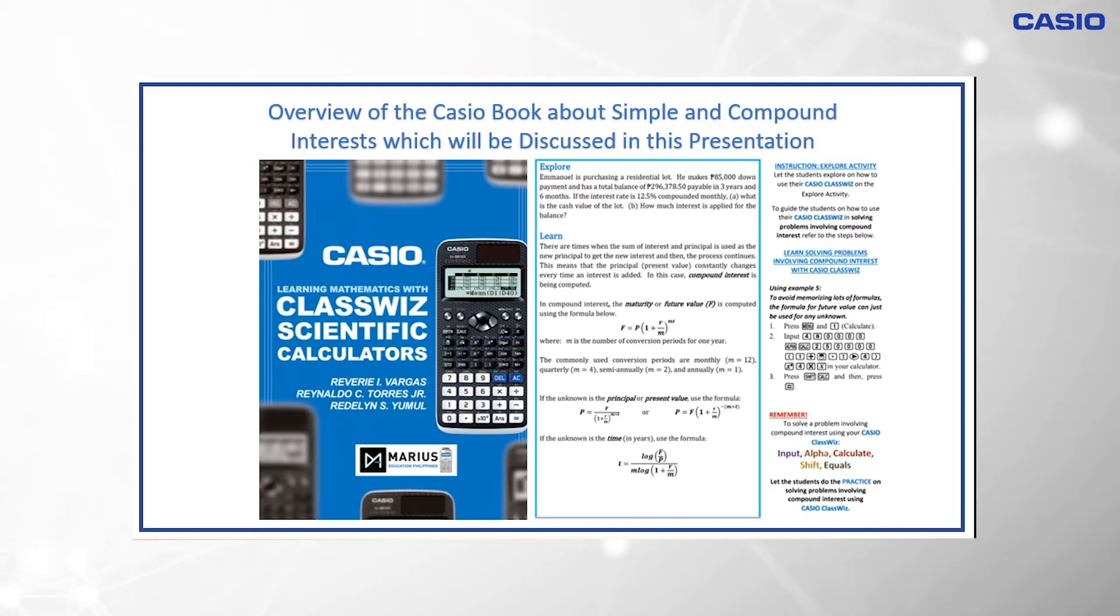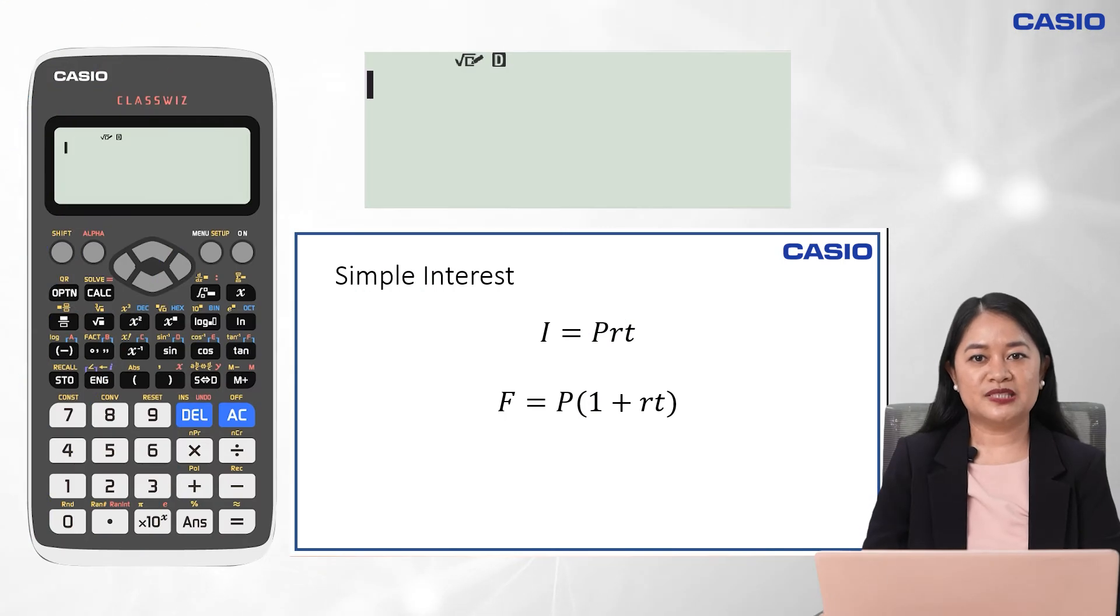To begin with, an interest is the rent paid for borrowing or using a certain amount of money called the principal. The rate of interest is the percentage of the principal that will be charged for a specific period of time. For problems involving simple interest, the interest is computed by getting the product of the principal, the annual interest rate, and the period of time in years. While the maturity value or future value is computed by getting the product of the principal and the sum of 1 and r times t.